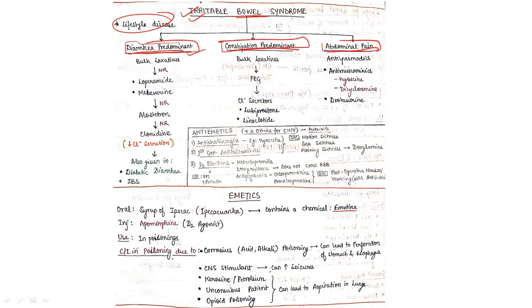Diarrhea predominant: bulk laxative is given. Not responding? Go for loperamide or mebeverine. Not responding? Go for alosetron. Not responding? Go for clonidine. Then resistant cases.